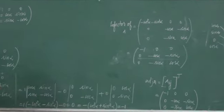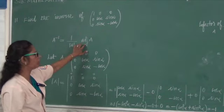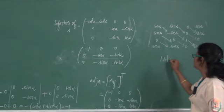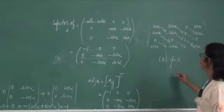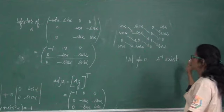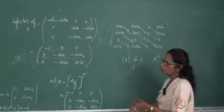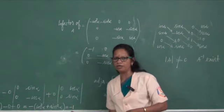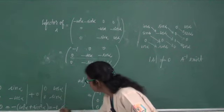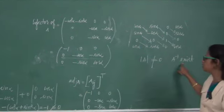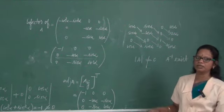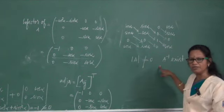We have found determinant A and adjoint of A. One important note: determinant A not equal to 0 means A inverse exists. Here we arrived at determinant A equal to minus 1, which is not equal to 0, so A inverse exists. If determinant A equal to 0, A inverse does not exist.